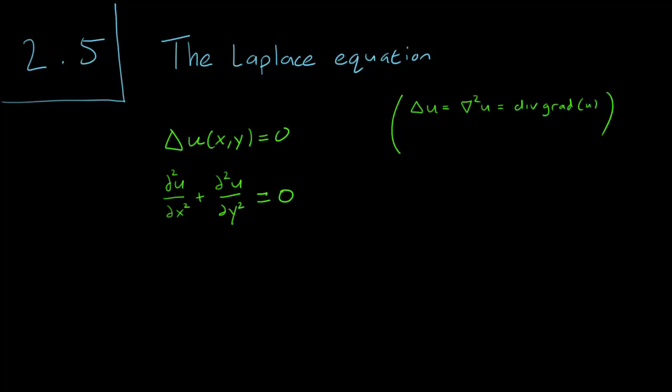If we set the Laplacian equal to zero, this means that there is no net flux in our vector field. Here is a visual representation of what it looks like to have a zero Laplacian, so there's zero net flux.